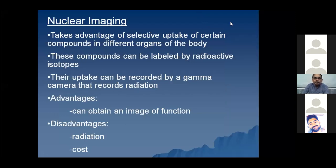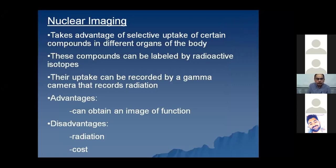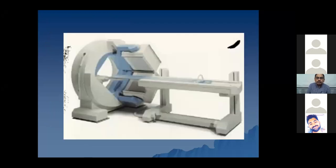Nuclear medicine. In some examinations, especially in patients when we are looking for any widespread metastasis, nuclear imaging is used to find out the spread of metastasis within the bone or within the soft tissues of the body. There is avid uptake of glucose bounded with a radioisotope, resulting in increased signal in the area of that lesion, and the scan examination is performed. This is a typical gamma camera used in nuclear imaging.